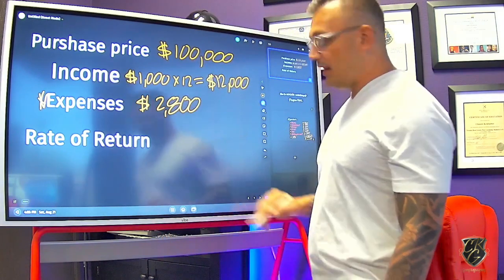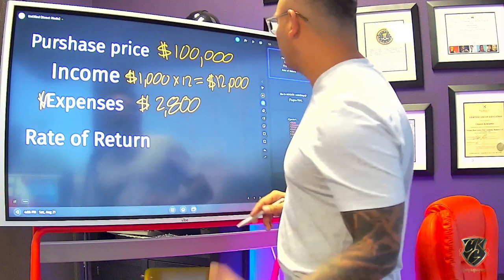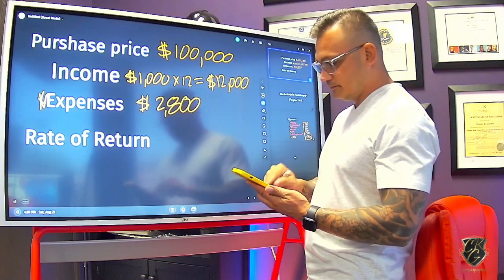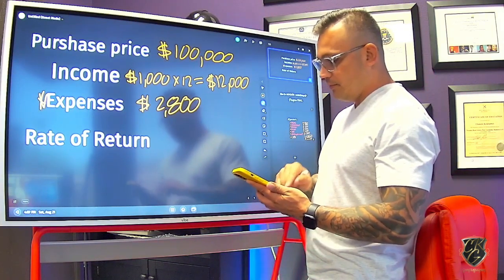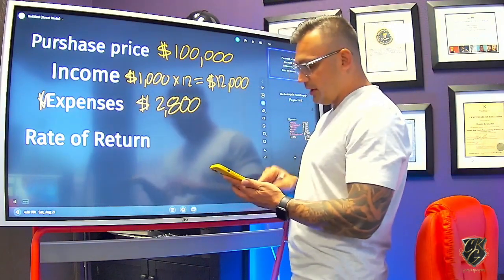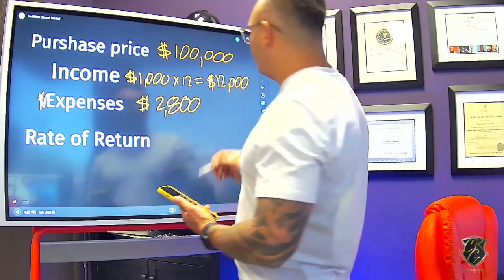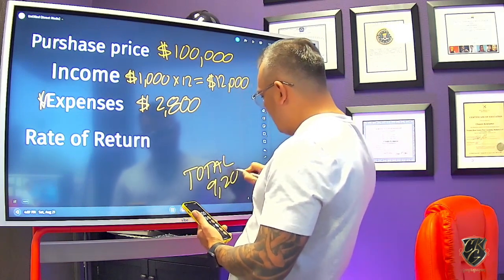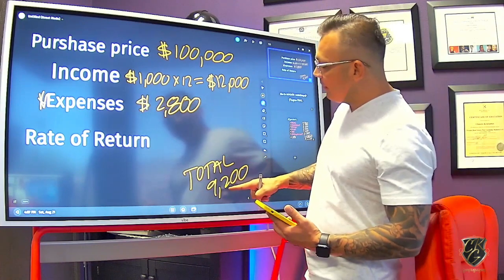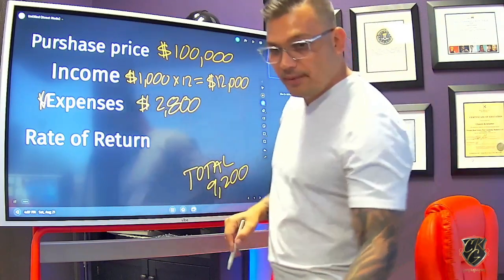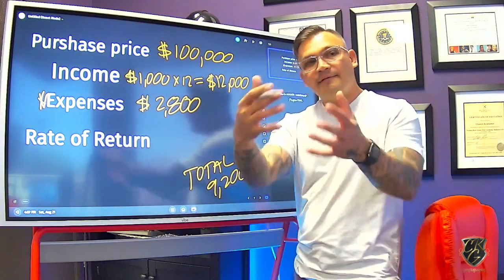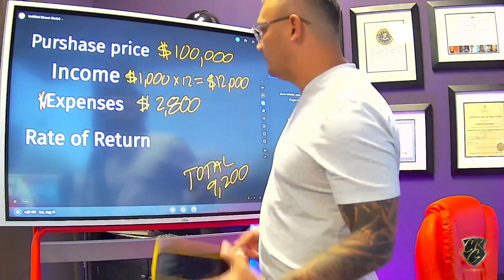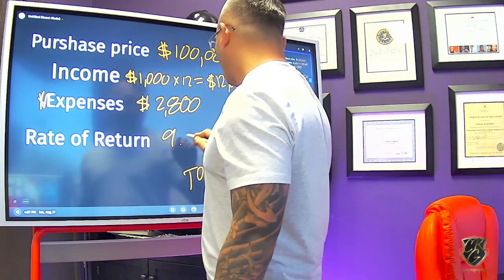Now let's figure this out. We're going to take $12,000 in annual income minus $2,800 in expenses — that gives us a total of $9,200. Now we take that number and divide it by our total purchase price of $100,000, because remember it's how much money you're putting into the deal and how fast you're getting that money back. That comes out to about a 9.2% return.